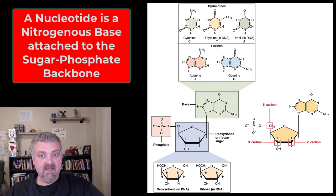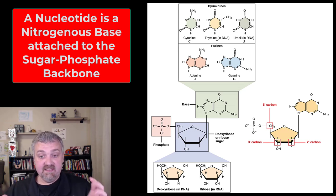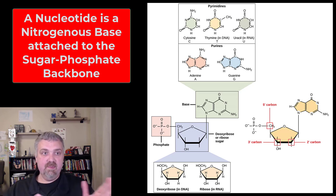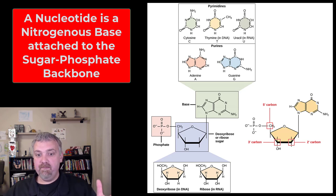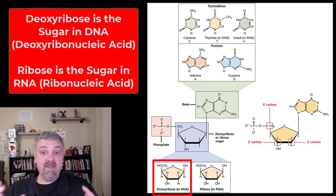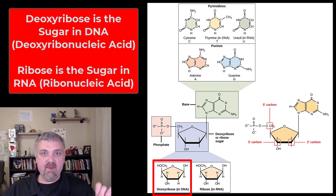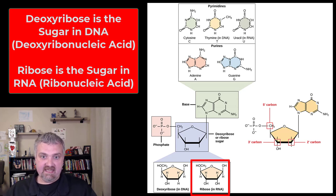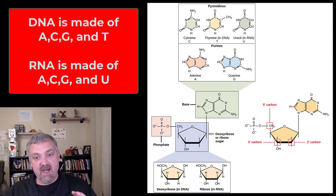So these 5 nitrogenous bases — A, G, C, T, and U — are called nitrogenous bases. When you add them to the sugar phosphate backbone, they are now called nucleotides. So both DNA and RNA are made of nucleotides and both have a sugar phosphate backbone. The sugar that makes up DNA is called deoxyribose, which is why DNA is deoxyribonucleic acid — because it's the name of the sugar. The sugar that makes up the backbone of RNA is called ribose, which is why RNA is ribonucleic acid.